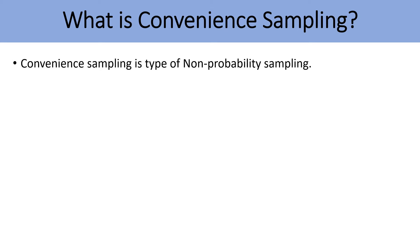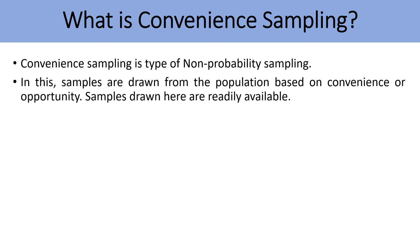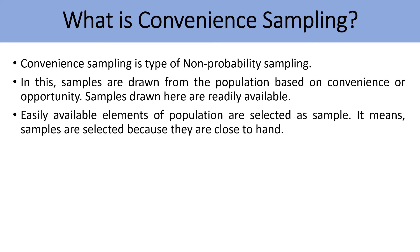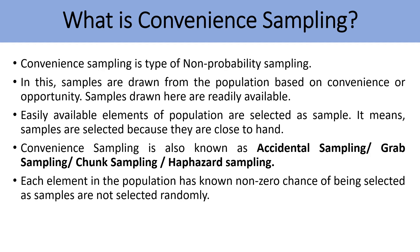Convenience sampling is a type of non-probability sampling method in which samples are drawn from a population based on convenience or opportunity. Samples drawn here are readily available — easily available elements of the population are selected as samples, meaning samples are selected because they are close to hand, not by some randomness. That is why convenience sampling is also known as accidental sampling, grab sampling, chunk sampling, haphazard sampling, or sometimes opportunity sampling.